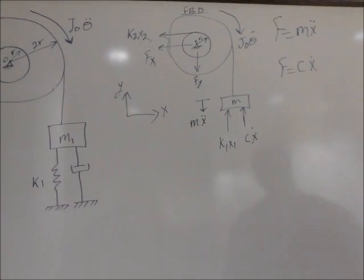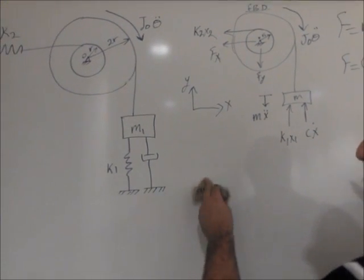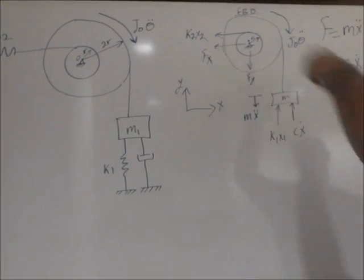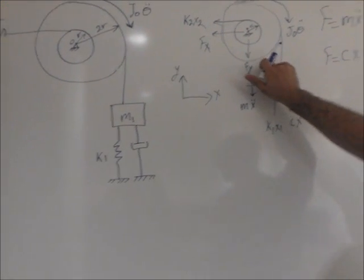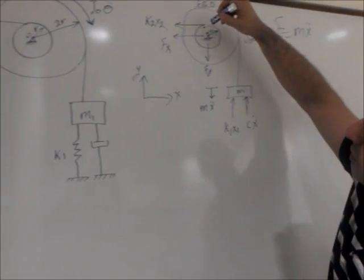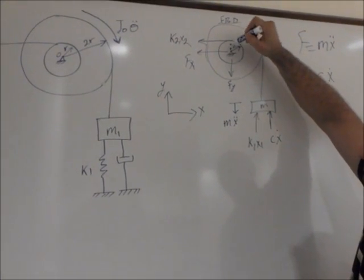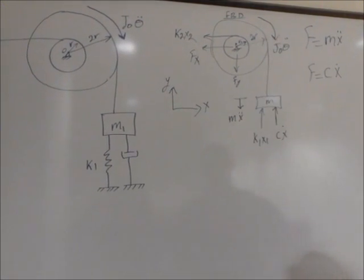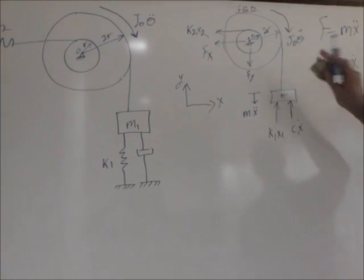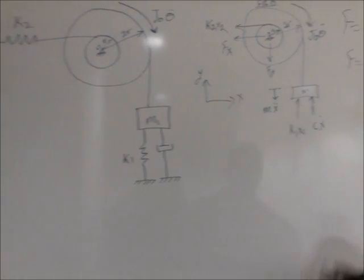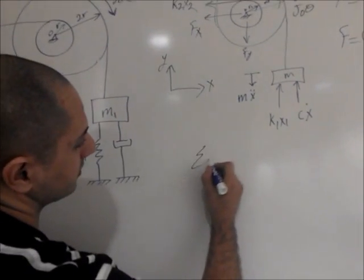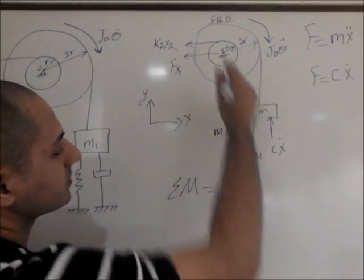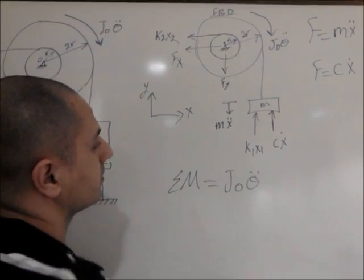So after you've got the free body diagram, now let's derive the actual equation of motion. And the first thing you need to start out, since we know it's automatically rotating, we will do the summation of moment. And in this case, we'll do the summation of moment at pin O. Don't forget to draw this, we'll call this 2R. Alright. So now, after we've got this right here, let's work it out. So summation of the moment equals the moment of inertia of the cylinder.